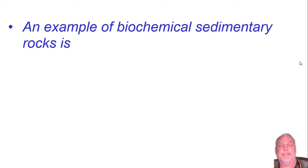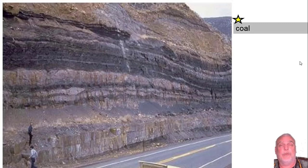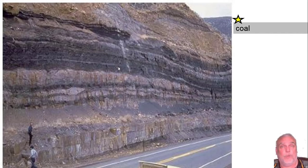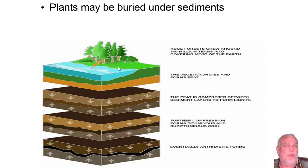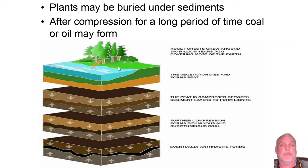An example of biochemical sedimentary rock is coal. If you've ever been through Kentucky or West Virginia, you'll see a lot of coal there. When you're driving through the hills, roads cut through them reveal layers and layers of coal - all these dark areas. The United States has a lot of coal. Coal formation: you have green plants that are buried under sediment and then compressed under weight for a long period of time, and you might get coal or even oil to form in this situation.